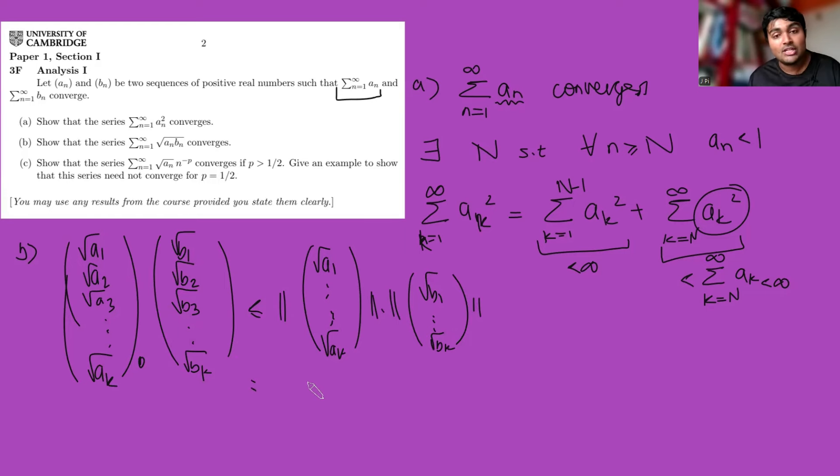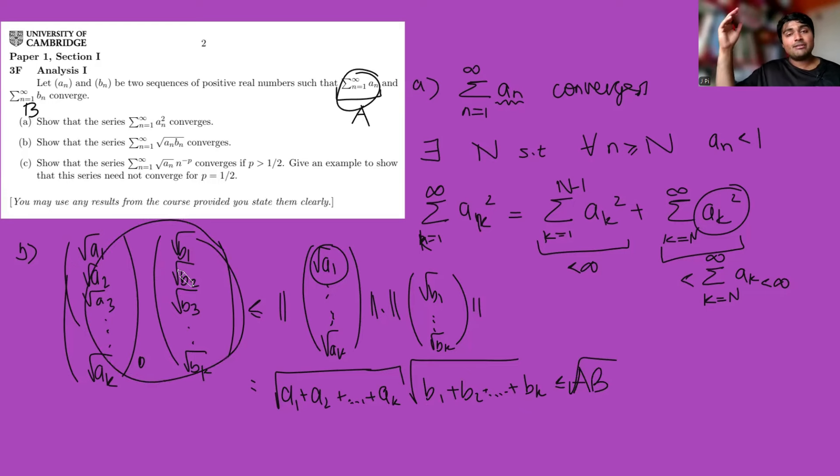So this must be less than or equal to the magnitude of this first vector times the magnitude of the second vector. What is the magnitude of this? We can just use the Pythagoras kind of definition of the magnitude. It's this term squared, which is just a1 plus the second term squared, so root a2 squared is a2 and so on all the way up to a_k. Same thing here. This is b1 plus b2 plus blah blah blah up to b_k. You can do some limits as k goes to infinity, but at the end of the day this thing here is less than infinity even as k goes to infinity. This guy here is bounded above. You can think of it as a monotonic increasing sequence, and so it converges.